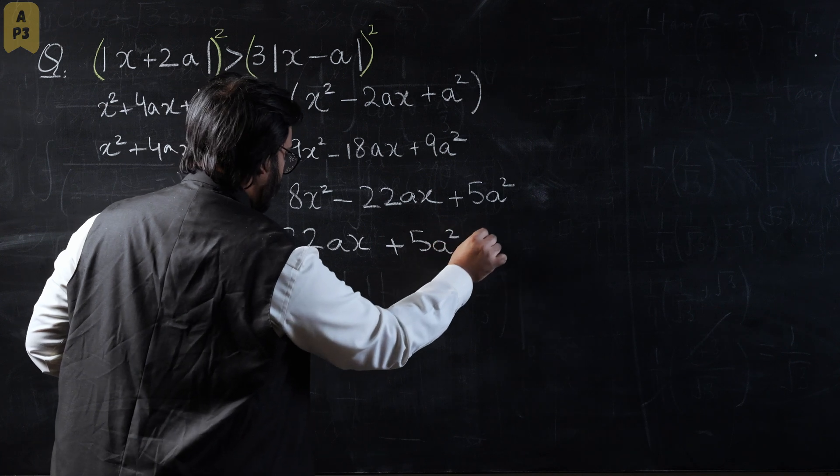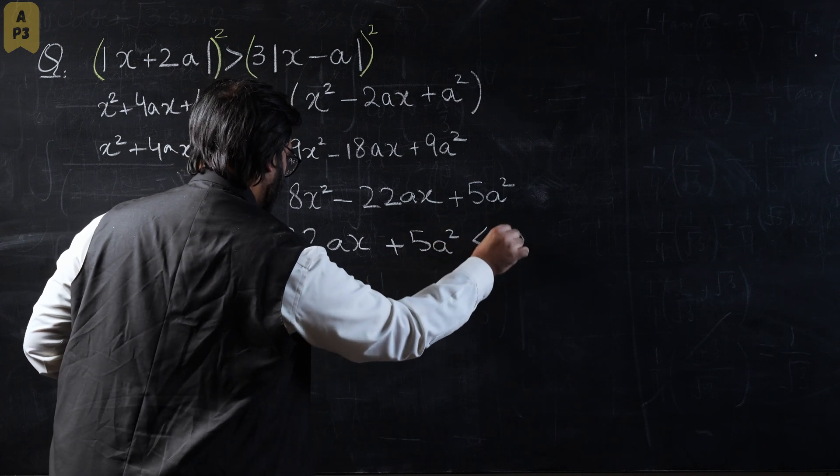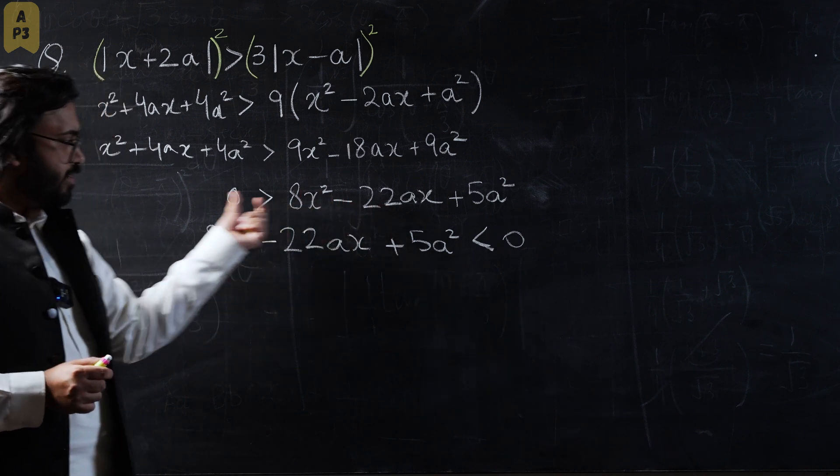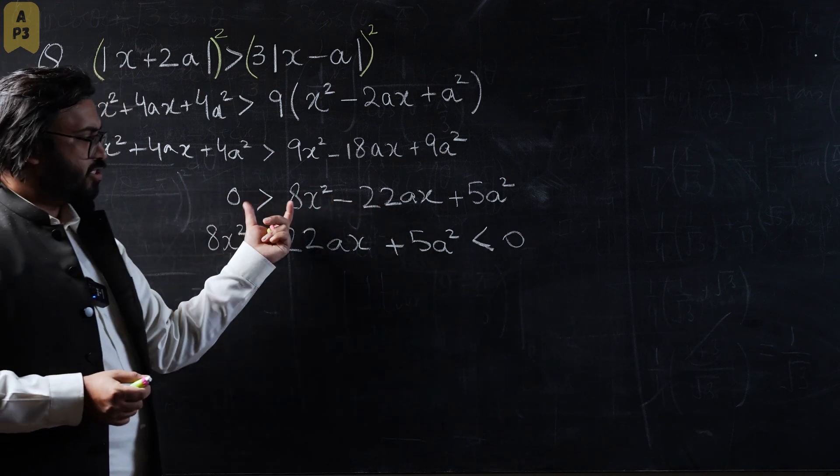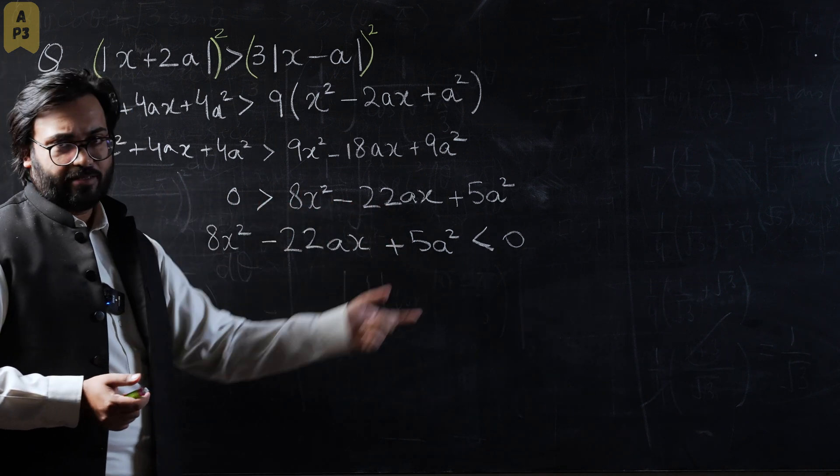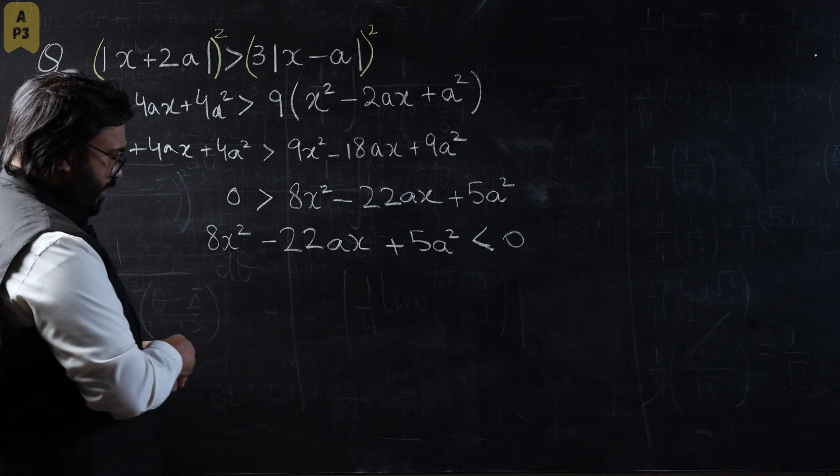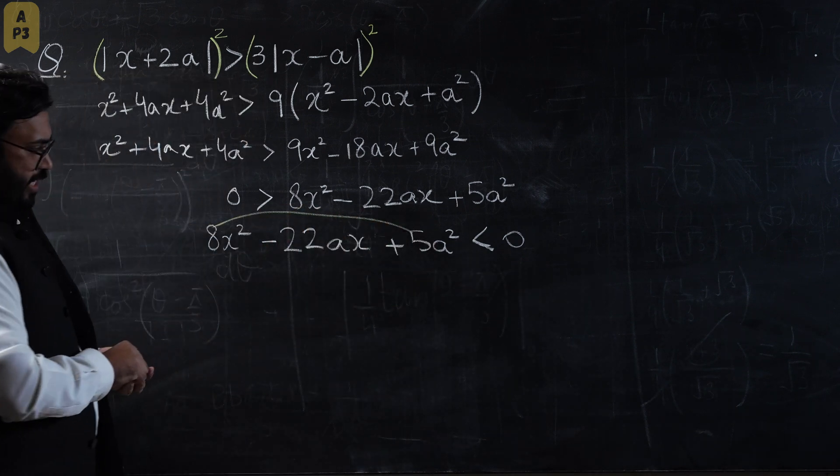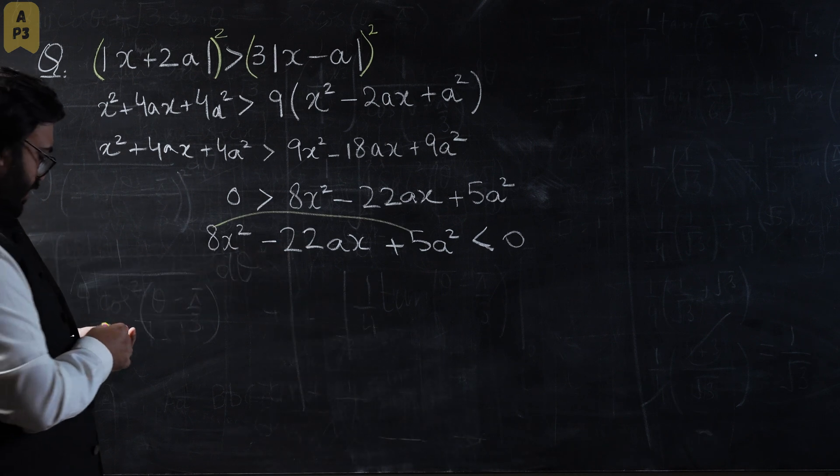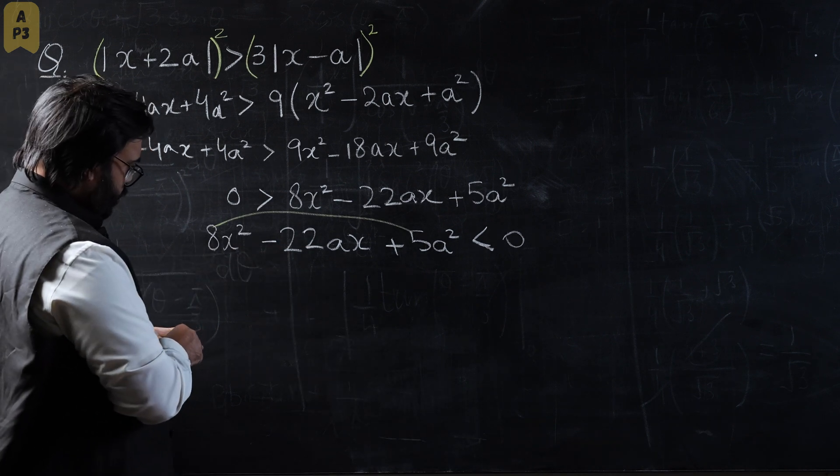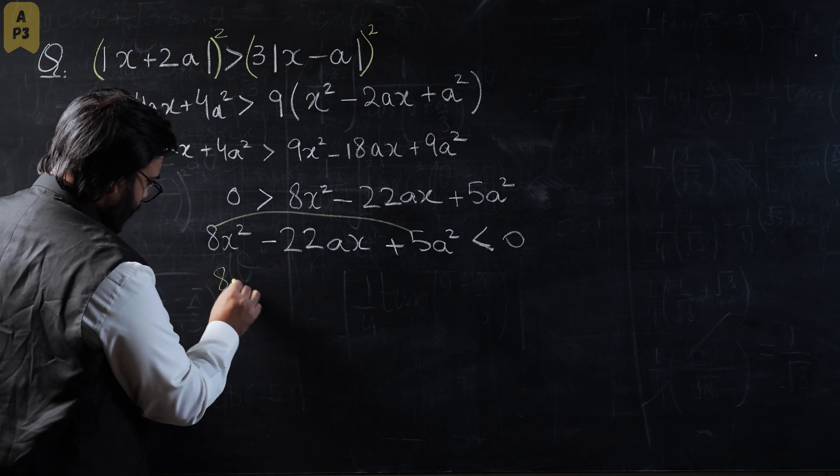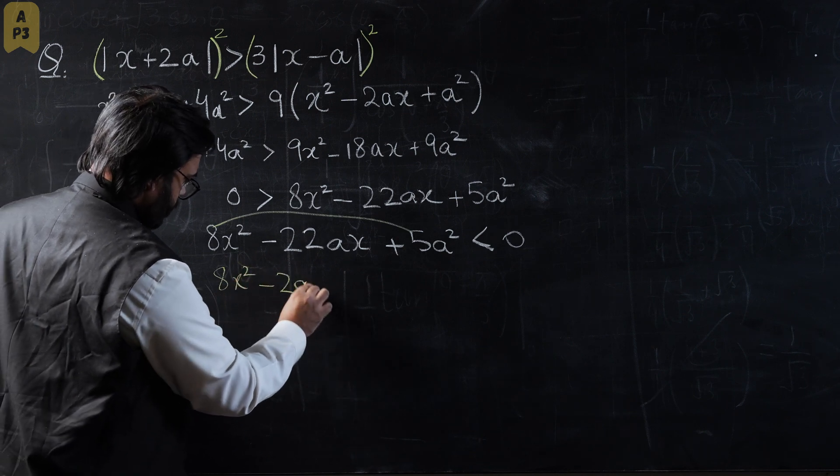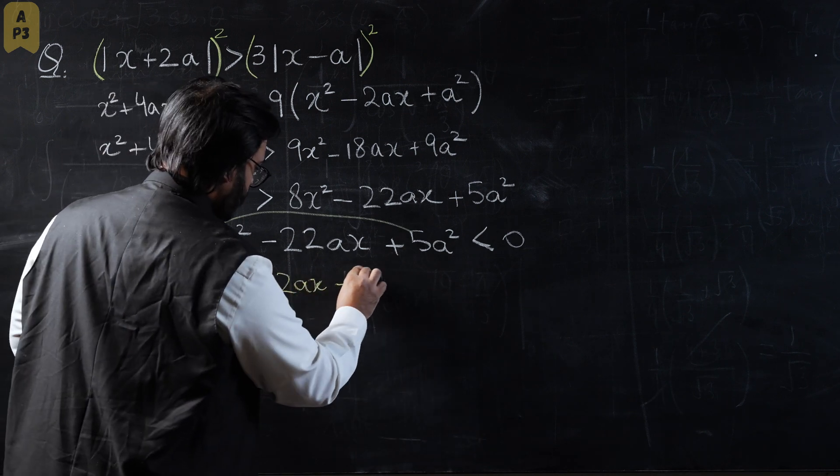This would be 5a squared, less than zero. Do not get confused—I'm not bringing the terms to the left-hand side, I'm just flipping the inequality. Now I'm going to factorize it. We understand that 8 times 5 is 40, and 20 times 2 is 40 as well. So I'm going to factorize this portion.